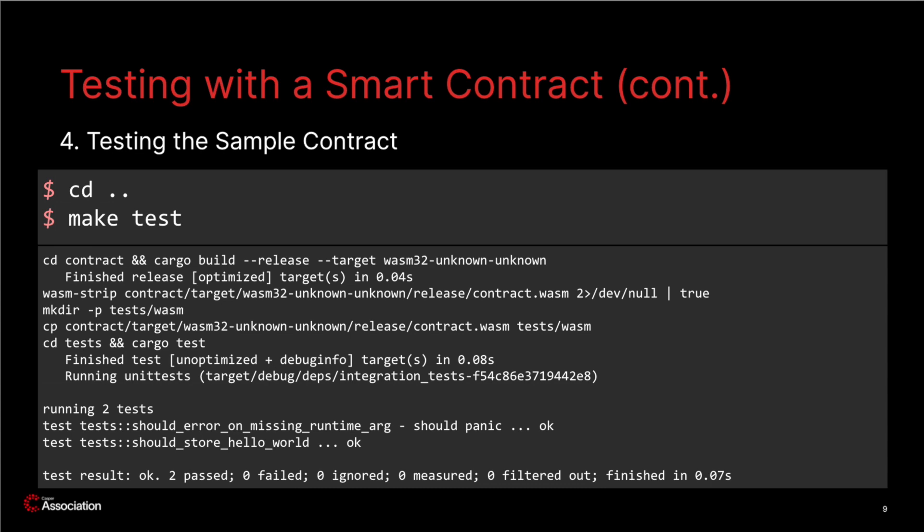When you run this test crate it will automatically build the smart contract in release mode, just like we did a moment ago, and then run a series of tests against it. So while you're building locally, you don't need to manually compile your contract if you're running the test script. The custom build script is named build.rs if you're interested in looking more into it. After compilation finishes, the tests should run and you should see outputs similar to the message shown in your terminal.